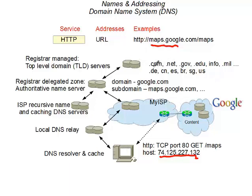The important points are that top-level domain servers do not handle requests directly. They delegate namespaces like google.com to authoritative name servers, and those in turn distribute records to DNS servers in carriers, ISPs, and other agencies. The information is then cached.